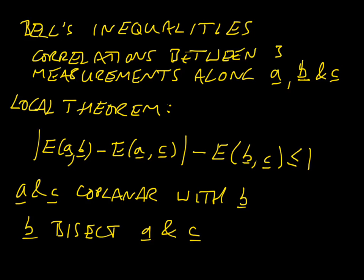Things are more complex than that — various people have introduced more complex questions, such as whether it matters when you choose which directions to measure along. In all cases so far, we have yet to see any evidence of Bell's inequalities being obeyed. Therefore in every case we find that quantum mechanics is non-local, and we just have to accept that perhaps the universe is more probabilistic than we would otherwise like. This is not meant to be a rigorous introduction — that is rather more complex than I can explain in a ten-minute video.